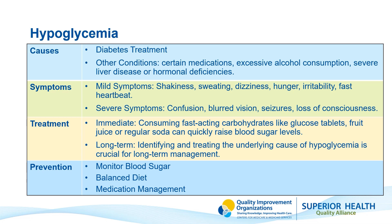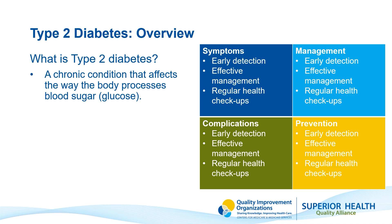To recap, type 2 diabetes is a chronic condition that affects the way the body processes blood sugar, named glucose. In this form of diabetes, the body either resists the effects of insulin — the hormone that regulates and moves sugar into your cells — or doesn't produce enough insulin to maintain normal glucose levels. This leads to elevated blood sugar levels, which can cause symptoms such as increased thirst, frequent urination, and fatigue. Over time, unmanaged type 2 diabetes can result in serious complications including heart disease, kidney damage, nerve damage, and vision problems.